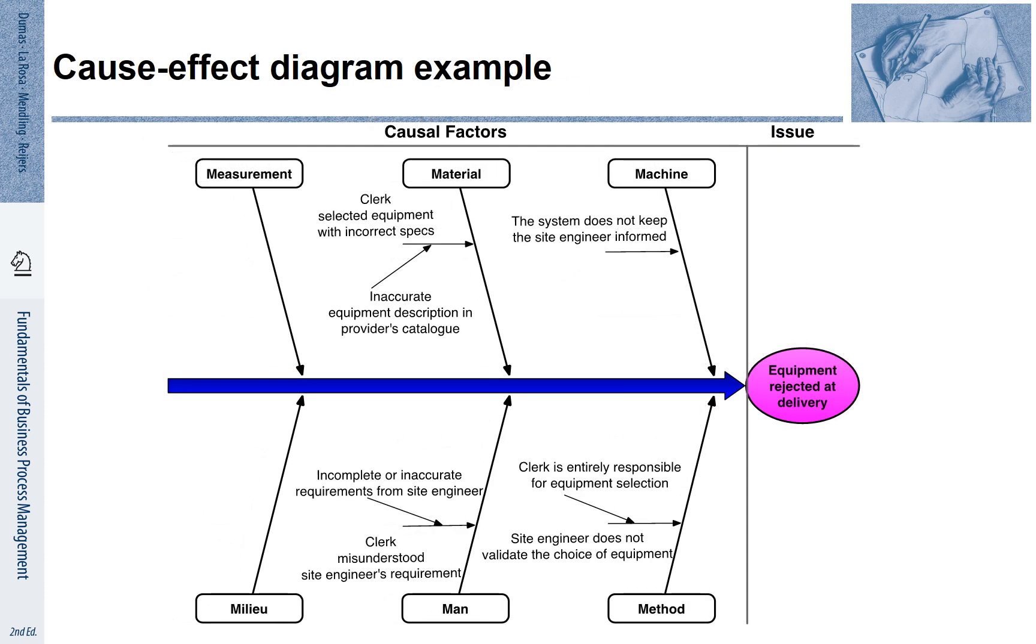Let's look at an example again from our equipment rental. The issue is equipment rejected at delivery. The idea of the cause-effect diagram is that we now go through each of the categories and try to think about potential plausible explanations.